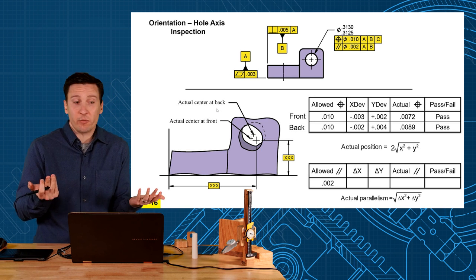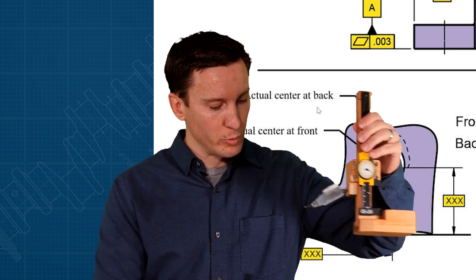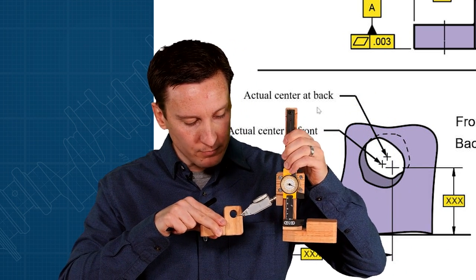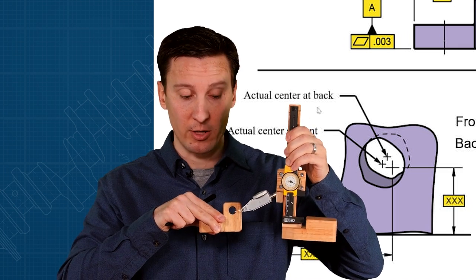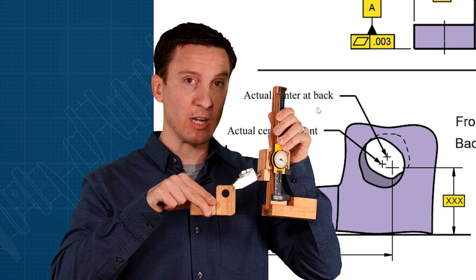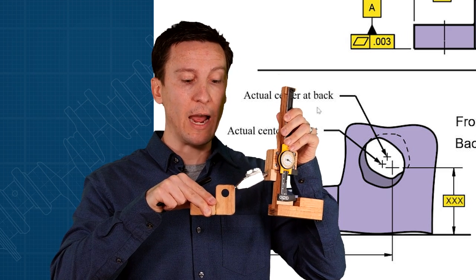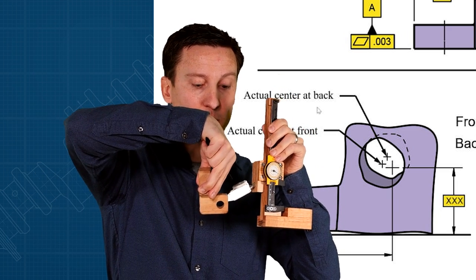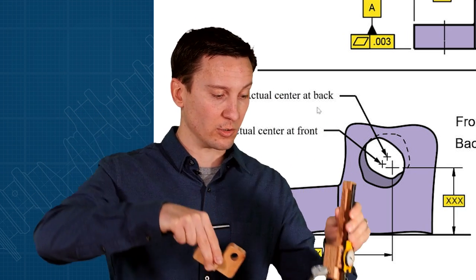So now we're going to measure with a device as simple as a height gauge. We would measure where the front of the hole is. We would touch the bottom, touch the top, halfway would be the center. And then go to the back of the hole, same thing. Touch the bottom, touch the top, halfway would be the center. And then we would rotate 90 degrees and then do the same thing to measure it in the other direction as well.